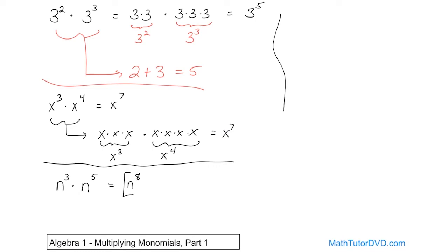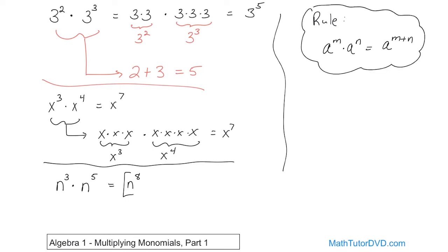You might see something in your book like a rule: a to the m power times a to the n power is equal to a to the m plus n. A lot of students look at this and don't know what to make of it. But really, all it's saying is that the bases have to match — that's why a is the same — and then you take these two exponents and add them together. That's all you're doing.